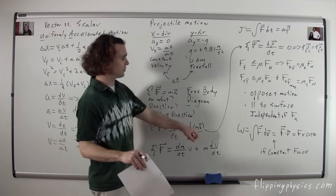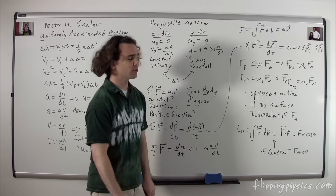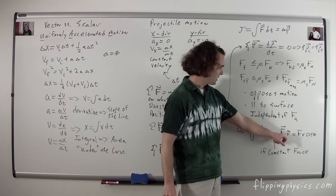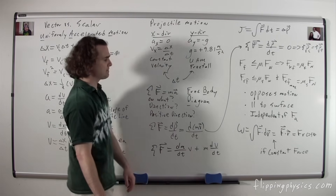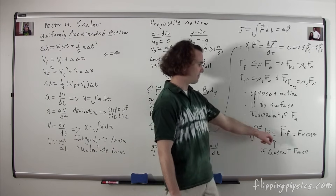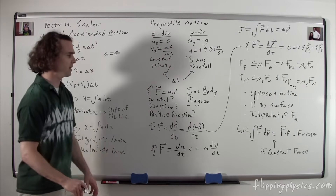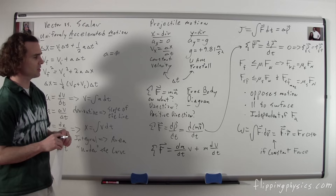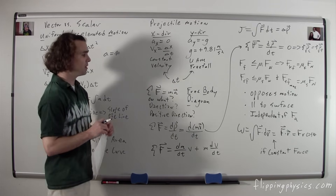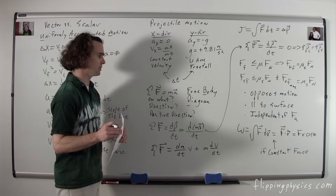Work is equal to the integral of force dot product with displacement. If you have a constant force, that simplifies to the dot product of force and displacement: F times r times cosine theta — the force times the change in position times the cosine of the angle between the force and the change in position.